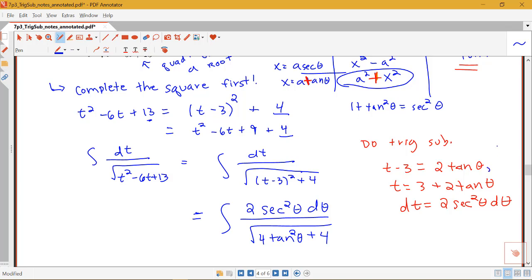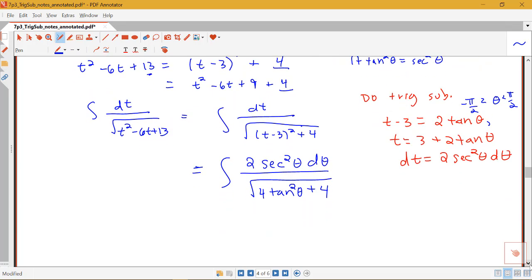Remember that we are noting that theta is between negative pi over 2 and pi over 2 here. So what's the next step? We had to figure out the form, we had to set up our trig substitution, we did the rewriting the integral step. Remember that the next step is now we want to use our Pythagorean identity. Since we're using the tangent substitution, we're using the identity tan squared plus 1 equals secant squared theta.